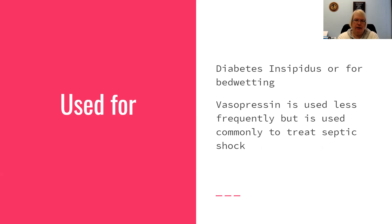Now, a lot of you get diabetes insipidus and syndrome of inappropriate antidiuretic hormone mixed up. I want to clarify: if it has antidiuretic hormone in it, that means you're holding too much fluid. Whereas diabetes insipidus doesn't have too much of it — it doesn't have enough. So you're peeing out a lot. So desmopressin is used for diabetes insipidus.